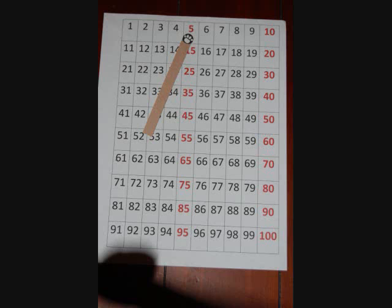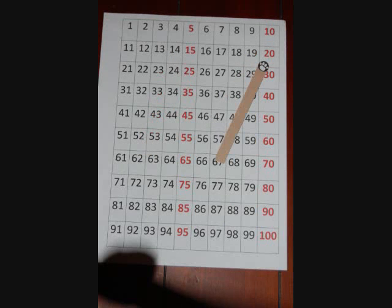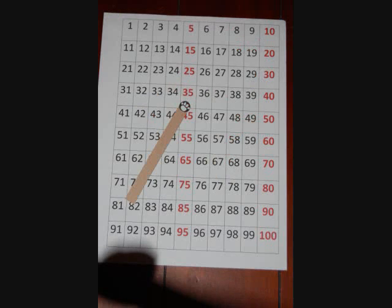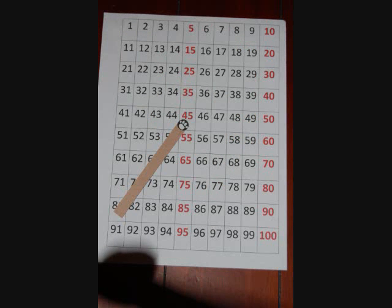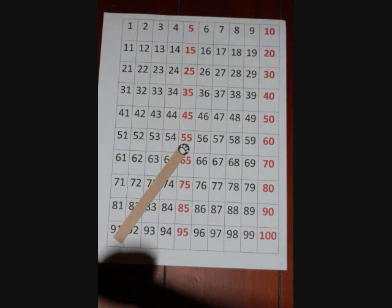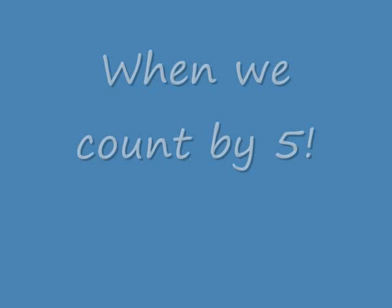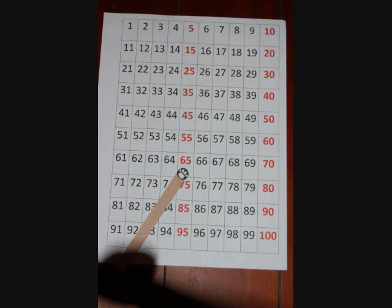Five, ten, fifteen, twenty, twenty-five, thirty, thirty-five, forty, forty-five, fifty, fifty-five, sixty — when we count by fives. Sixty-five,